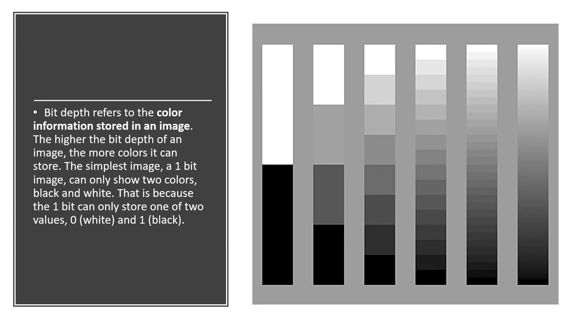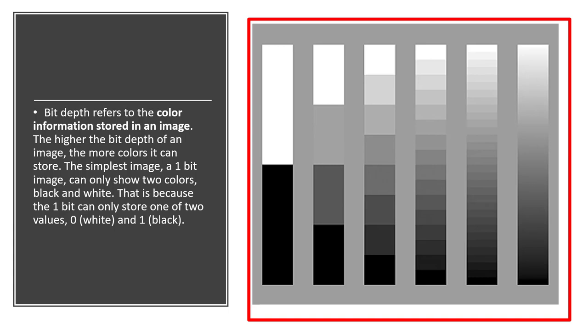Bit depth refers to the number of shades of gray or color information that can be stored in an image. The higher the bit depth of an image, the more colors or shades of gray that can be shown. Bit depth shows us a number of shades of gray that we can show between black and white.